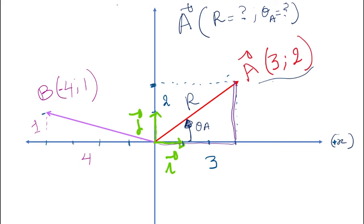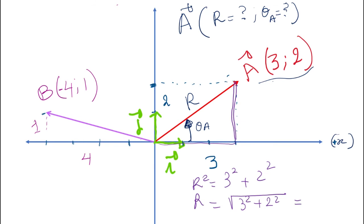In this case, we have the resultant vector R squared. It will be 3 squared plus 2 squared. R will be the square root of 3 squared plus 2 squared, so it will be the square root of 9 plus 4 — the square root of 13 — which is 3.6. Now we've found the magnitude of the vector.